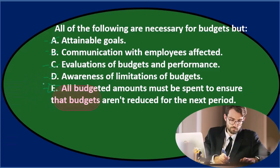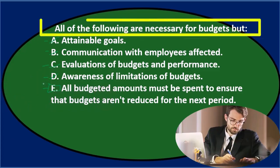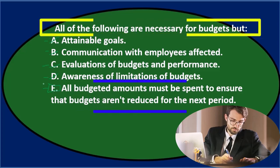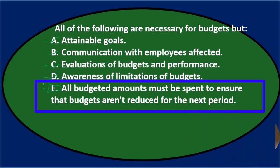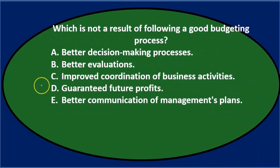So the final answer is E. All the following are necessary for budgets except E — all budgeted amounts must be spent to ensure that budgets aren't reduced for the next period. Next question.